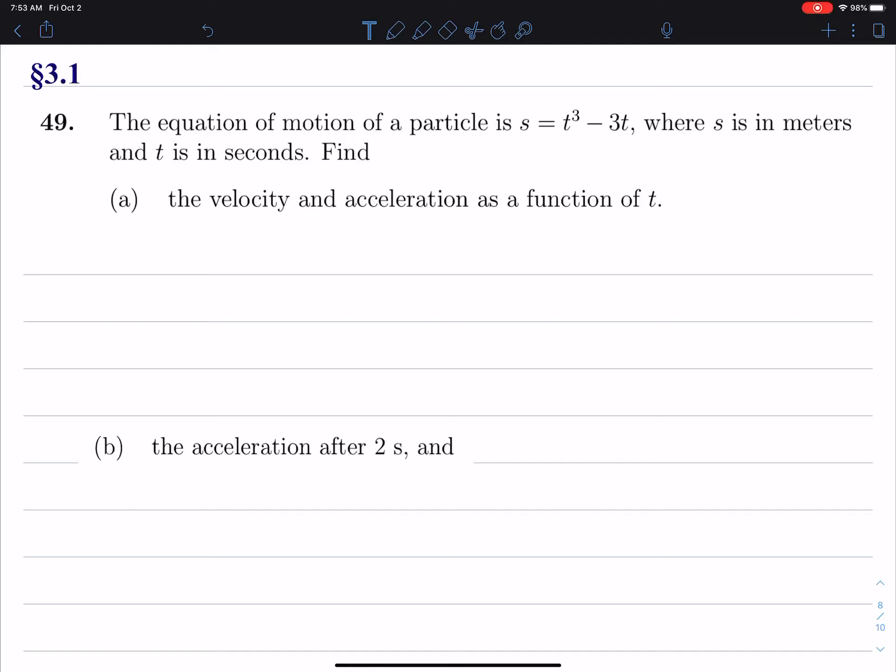Okay, in this problem we're looking at an object that is moving along a straight line and there is an equation of motion given by S equals T cubed minus 3T. So S is the position of this moving particle, the particle that goes forwards and backwards along a straight line. S is measured in meters and T is measured in seconds.